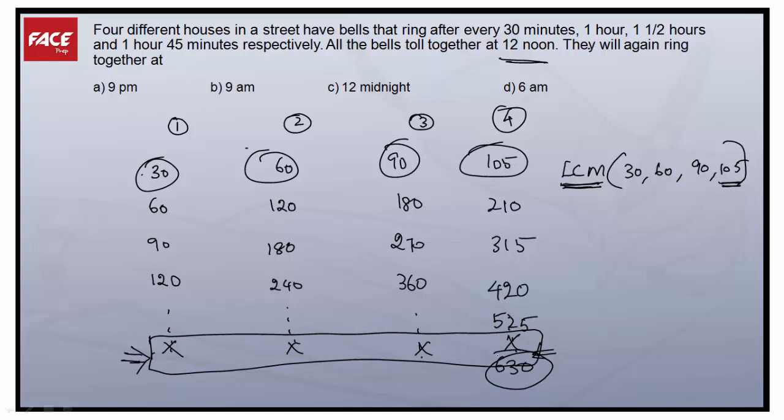630, let's check. Does it go with 90? Yes. 630 goes with 90. 630 goes with 60? No, 630 doesn't go with 60. So we'll find the next multiple of 630, which will be 1260. In fact, if 630 is not a common multiple, we'll check the next multiple, the immediate next multiple of 630 will be 1260.